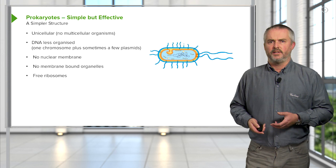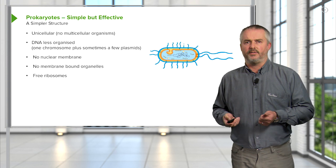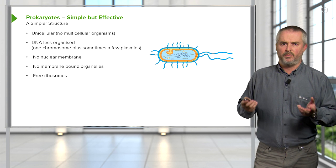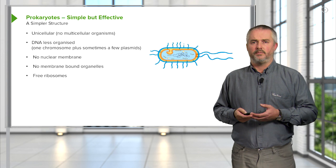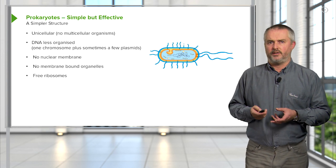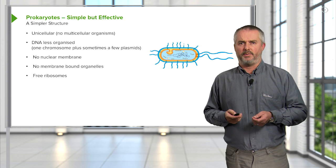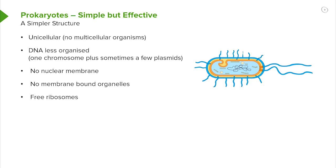Prokaryotes have a simpler structure overall compared to eukaryotes. They are unicellular — there is no multicellular bacteria at all. The DNA is in a single large chromosome floating in the middle of the cytoplasm. There's no nucleus, no nuclear membrane, and no membrane-bound organelles at all — so there's no mitochondria, no rough ER. The ribosomes are free floating in the cytoplasm.